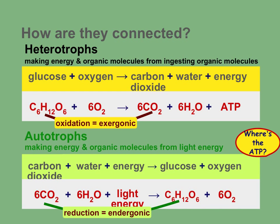So the question is, where is the ATP involved in photosynthesis? That is why all organisms, to do work, need cellular respiration. Even plants can't get it done alone just by the process of photosynthesis. Photosynthesis is not in the business of making ATP for cellular work — it's in the business of harnessing light energy to build organic compounds.